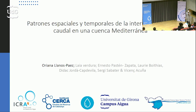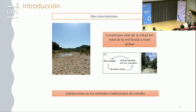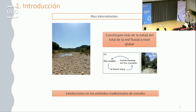Good afternoon. My name is Uriana Llanos and today I'm going to present a small part of my doctoral investigation in which we decided to study and analyze the spatial and temporal patterns of the intermittency of flow in a Mediterranean river. To begin with, I would like to define what is an intermittent river: as its name indicates, it's a river that does not flow constantly throughout time — at some point it's going to dry up. These rivers, although they may seem very particular, are in fact very abundant, calculated to constitute approximately half of the total global river network. This abundance means they are systems that support high biodiversity and provide multiple goods and services for society.